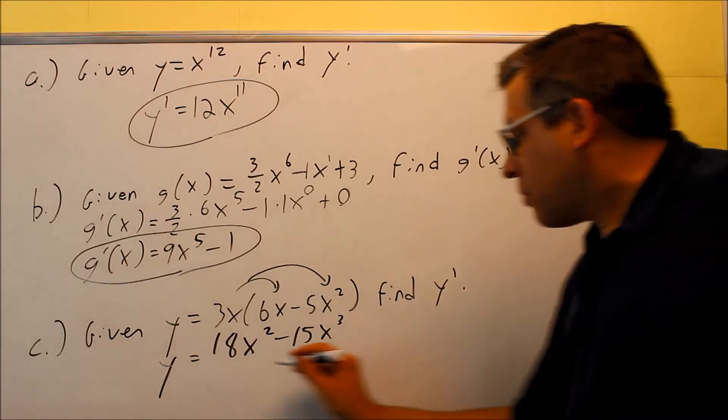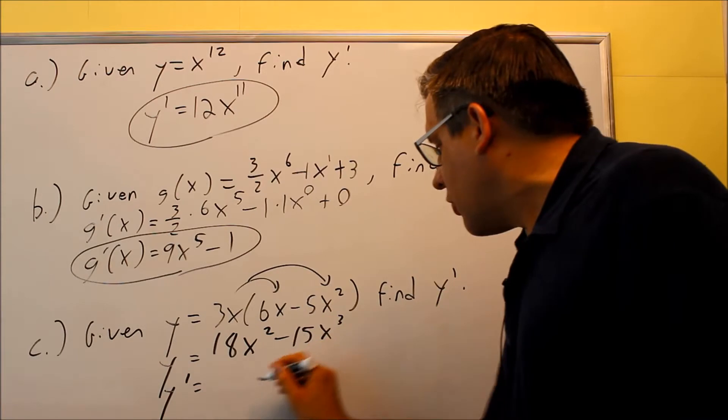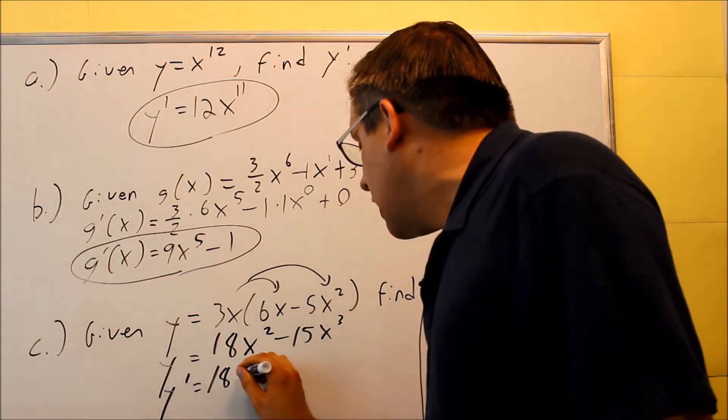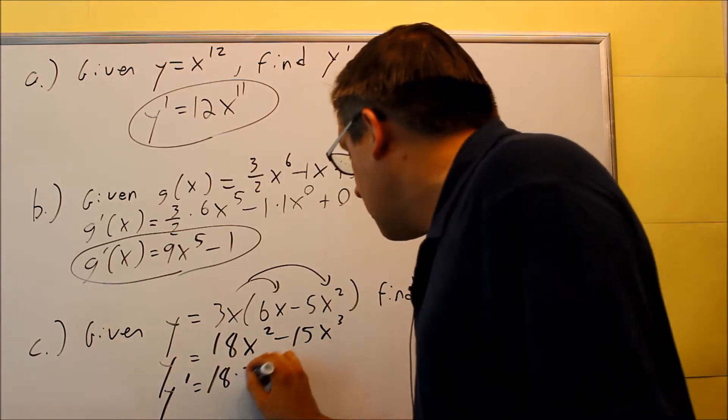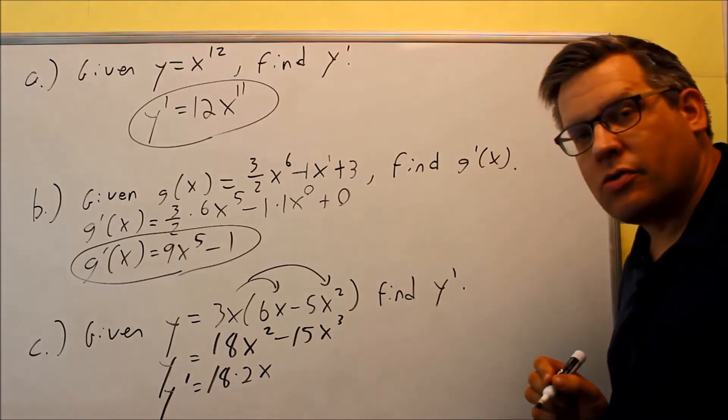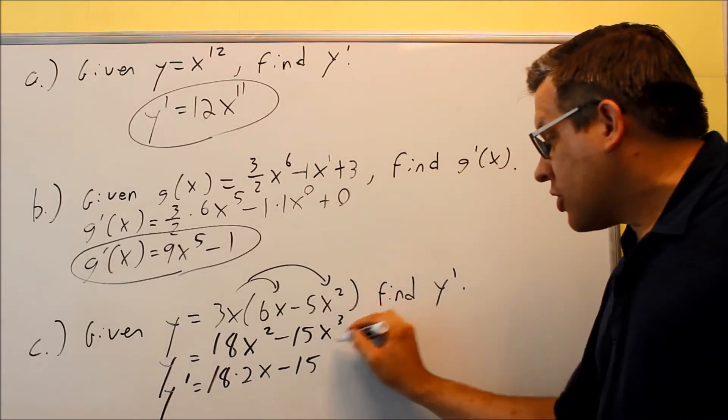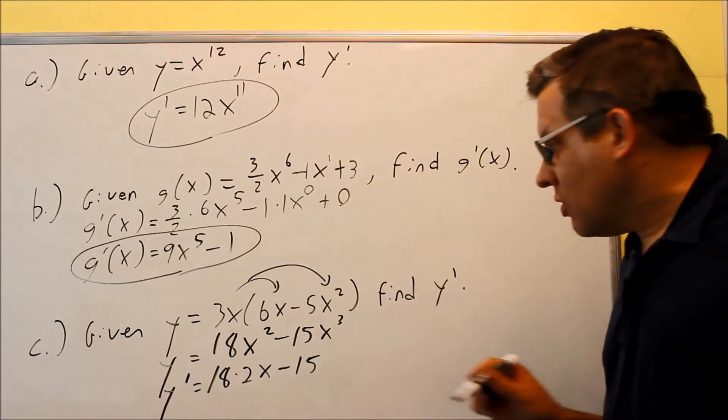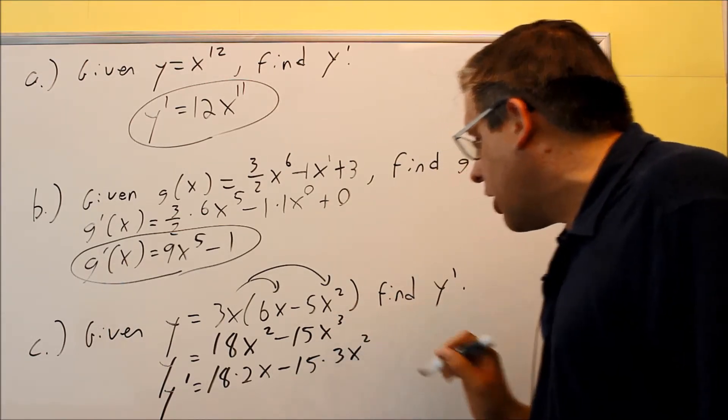And then we're going to apply the power rule. So the power rule will apply to this whole thing. The 18 we'll leave it, and then we're going to put the derivative of x squared. Two comes down, x subtract one from the power, this would be 2x to the first power, or just 2x. This one is minus 15, we're going to multiply it by the derivative of x cubed. The three is going to come down, we have x subtract one from the power, and you get a square.